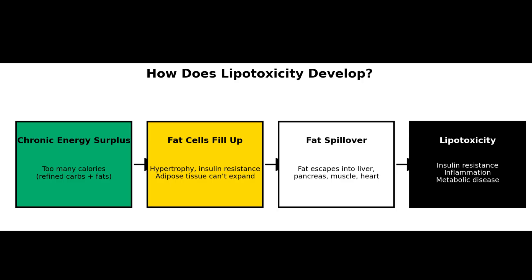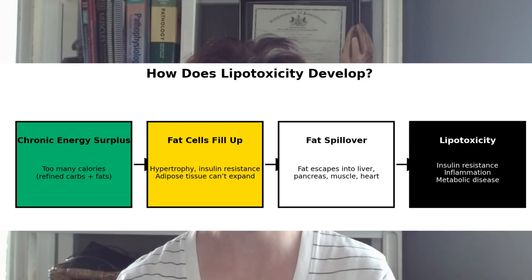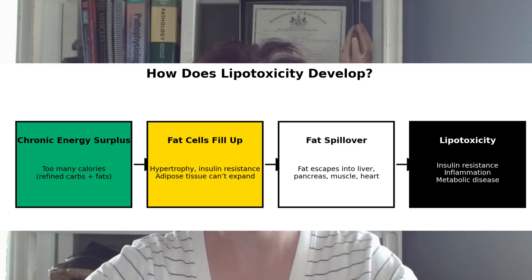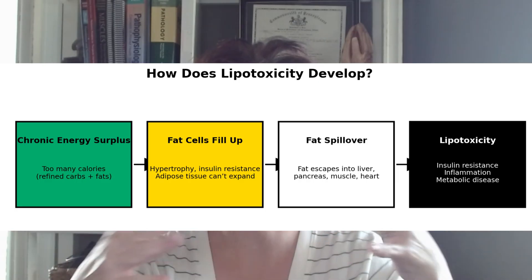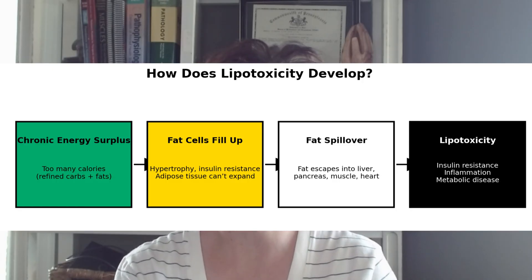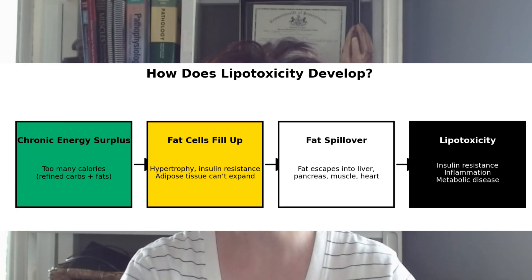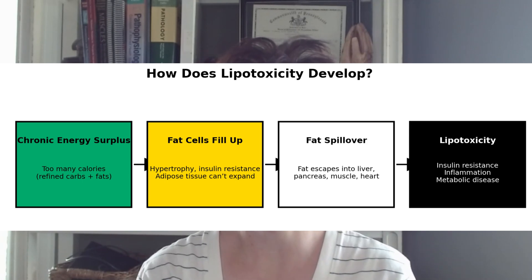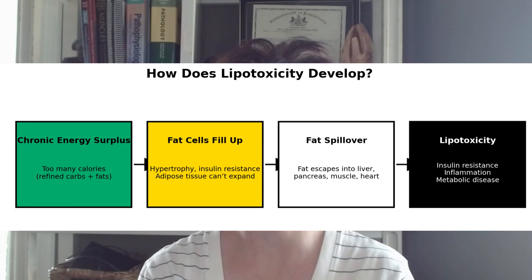It comes from too many carbs, especially refined carbs and processed fats. Then you get adipose tissue dysfunction — the fat cells become insulin resistant and are no longer able to store fat safely. What ends up happening is spillover. Imagine pouring a glass of water without paying attention — it fills up and starts spilling over the edges. That's what happens: fat deposits in the liver, pancreas, muscle, and heart, goes out into the circulation and invades those organs. When that happens, you get chronic inflammation, which amplifies all the damage.